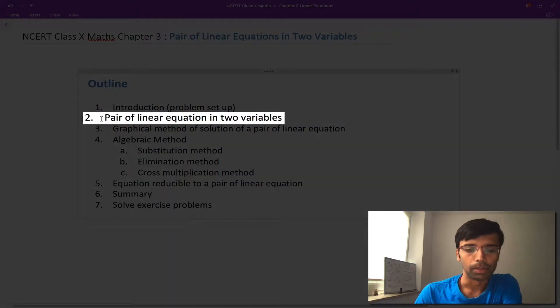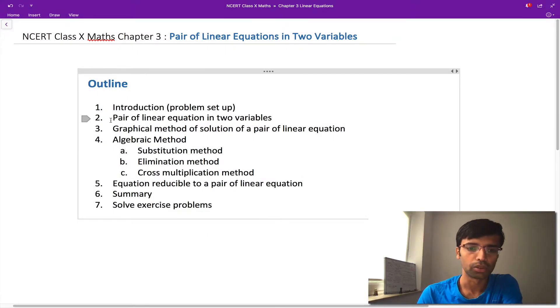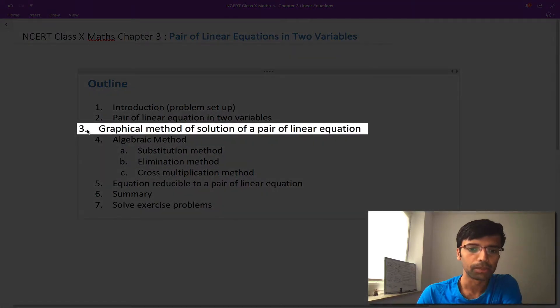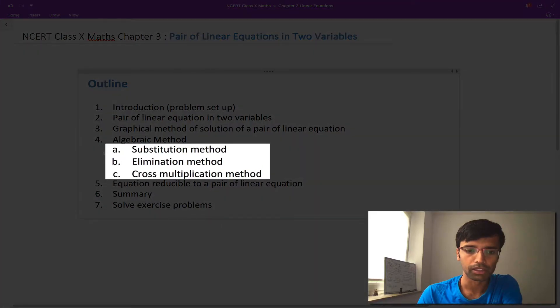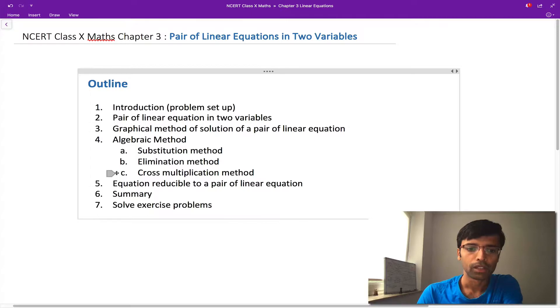We'll then go formally into the pair of linear equations, how to represent it and write it in two variables. Then we start to look into different methods we can use to solve them. We'll begin with graphical methods for solution. After this we dive into three different algebraic methods for solving it, namely substitution method, elimination method, and cross multiplication method. We'll go through all of them step by step through many different examples so it will be very clear.